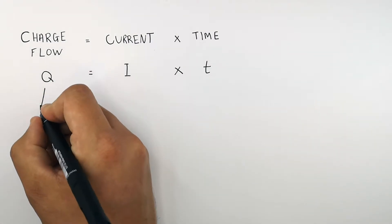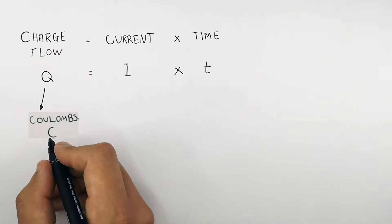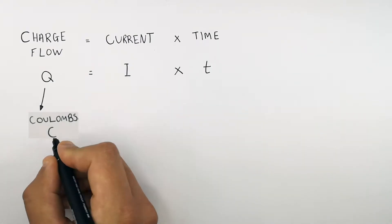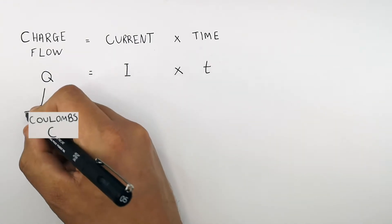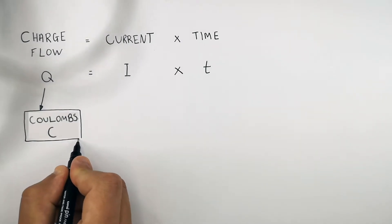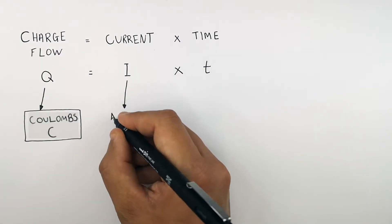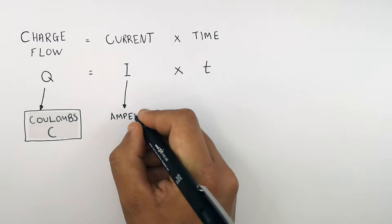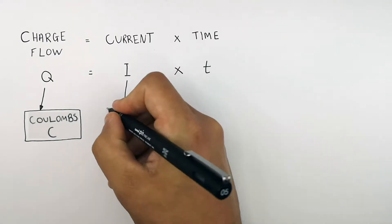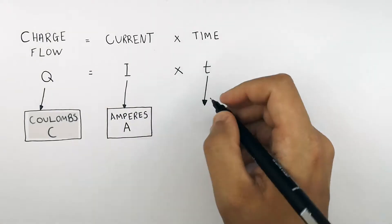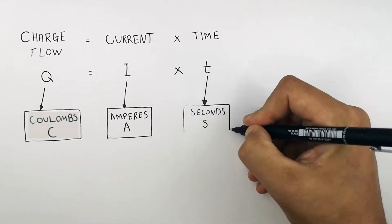The unit for charge flow Q is coulombs, and that's a capital C. The unit for current I is amperes, capital A. And the unit for time T is seconds, S.